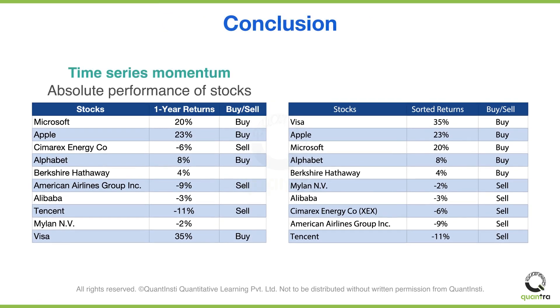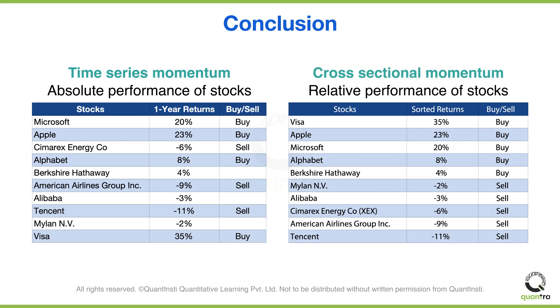You can observe that in time series momentum, we used absolute performance of stocks over some prior period. Whereas in cross-sectional momentum, we used relative performance of stocks over some prior period.